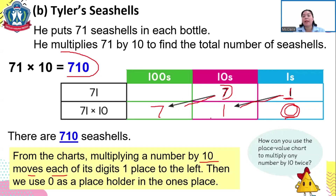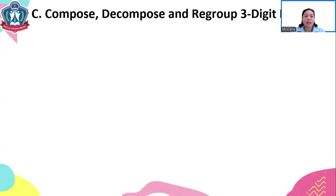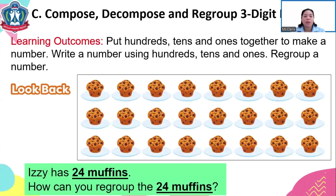So P3, if we multiply a number by 10, the digit moves one place to the left and becomes bigger. Next, let's have Lesson C: Compose, Decompose, and Regroup Three-Digit Numbers. Do you remember compose and decompose?